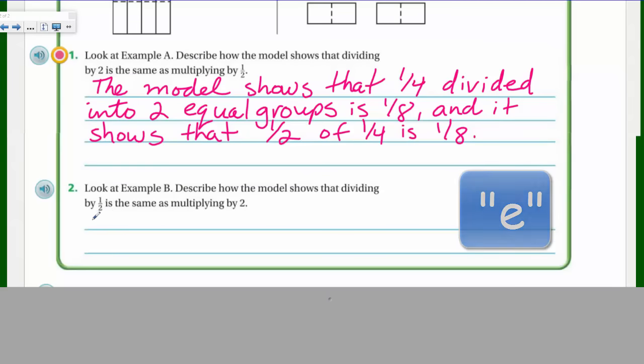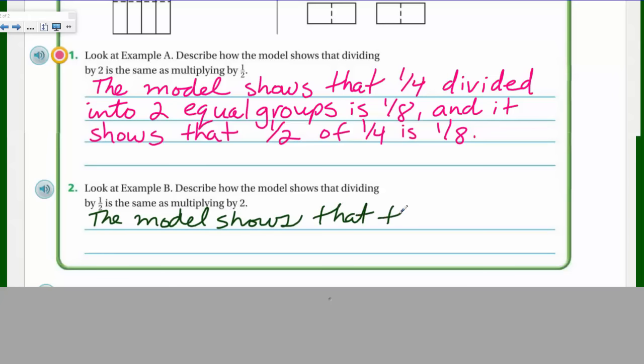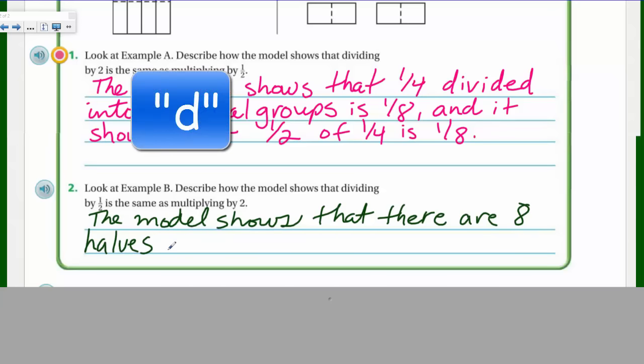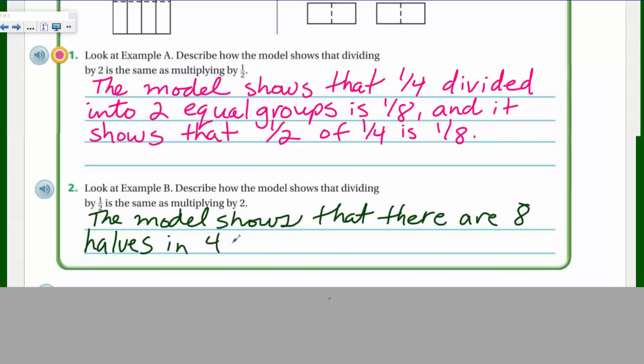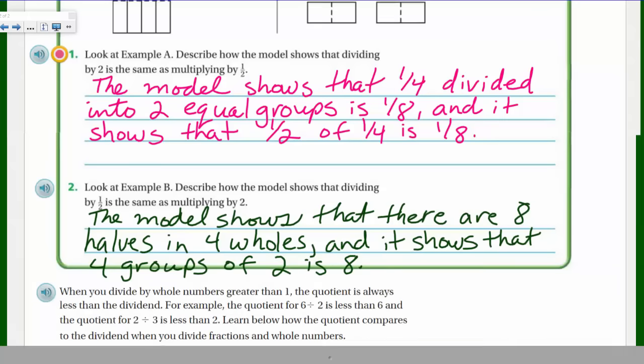So what did we say? So the model up there, the model shows that there are eight halves and four wholes. And it shows that four groups of two is eight. More problems here.